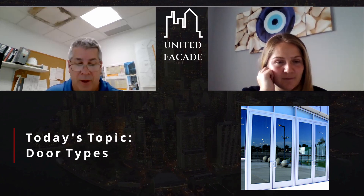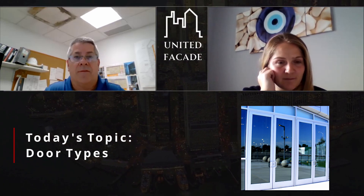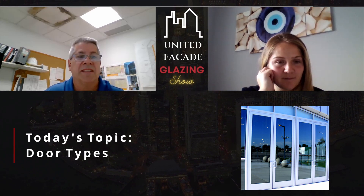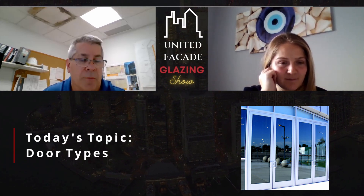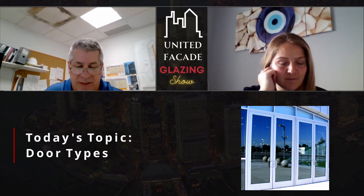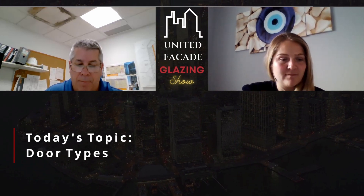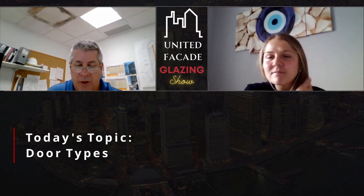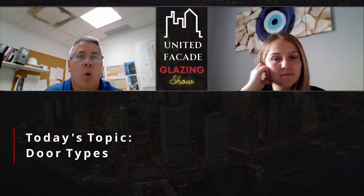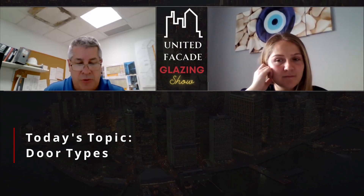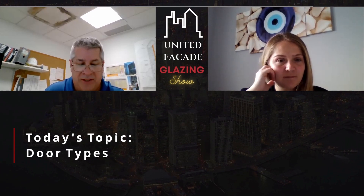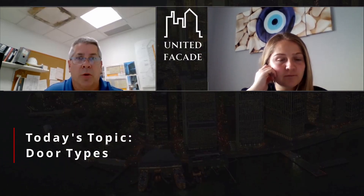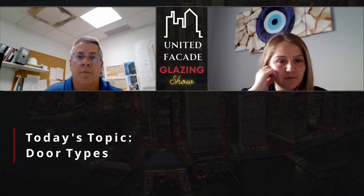Aluminum is a non-ferrous material, so it's not going to rust. A steel door is a ferrous metal and is susceptible to rust, but by treating a steel door with paint you'll be able to offset those weather-related issues. For a commercial door generally you'll have either a steel or aluminum frame and sash.